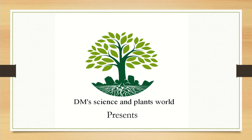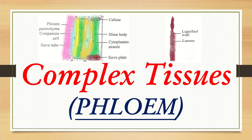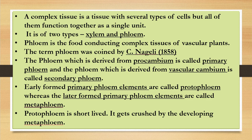DM Science and Plants World presents about the complex tissue phloem. A complex tissue contains several or various types of cells, and all together perform a similar function as a single unit. There are two types of complex tissue: xylem and phloem. We already discussed xylem — check the description box to find the link for the xylem video.